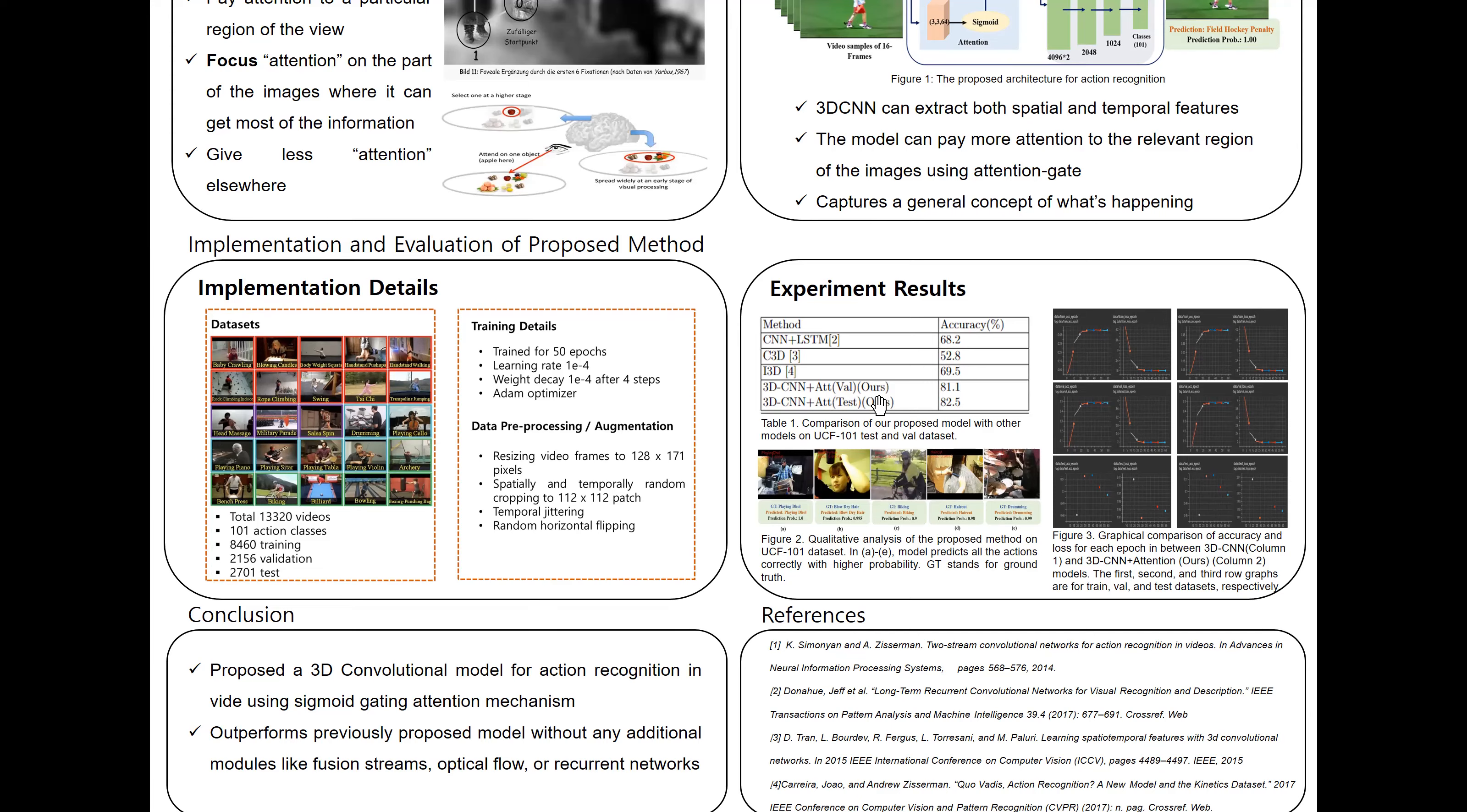The table shows the comparison results with previously proposed methods on UCF 101 dataset. It shows that our model, 3D CNN with the sigmoid attention mechanism, performs better than other mentioned models. As you can see, we were able to get accuracy of 82.5%.